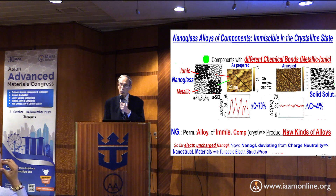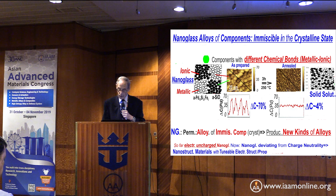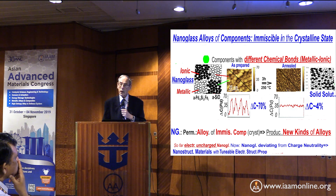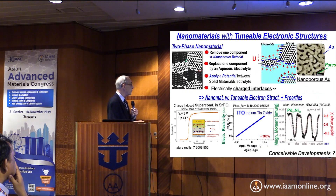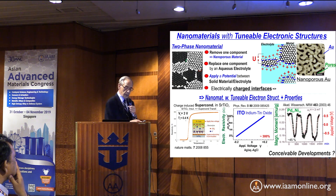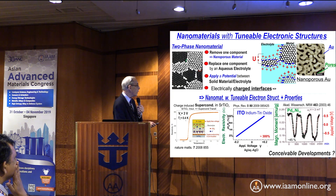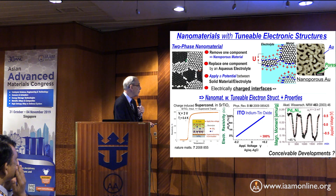There is one more thing we can do: we can also manipulate the electronic structure of these materials. We take a two-phase nanomaterial — shown here in black and white — then remove one component, the black one, and replace it with an electrolyte. By applying a voltage between the electrolyte and the residual component, we get a highly charged interface between the electrolyte and the white component.